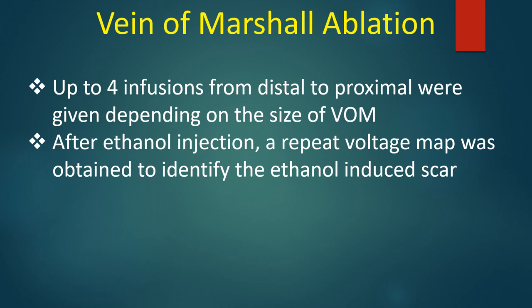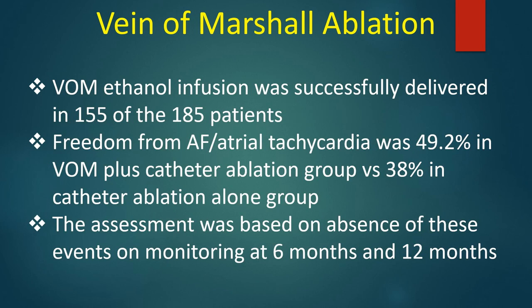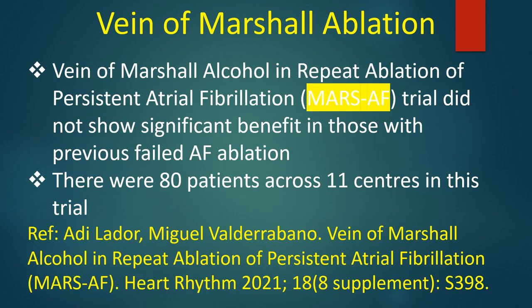After ethanol injection, a repeat voltage map was obtained to identify the ethanol-induced scar. Vein of Marshall ethanol infusion was successfully delivered in 155 of the 185 patients. Freedom from AF or atrial tachycardia was 49.2% in the Vein of Marshall plus catheter ablation group versus 38% in the catheter ablation alone group, based on absence of events on monitoring at 6 and 12 months. The MARS AF trial did not show significant benefit in those with previous failed AF ablation, with 80 patients across 11 centres.